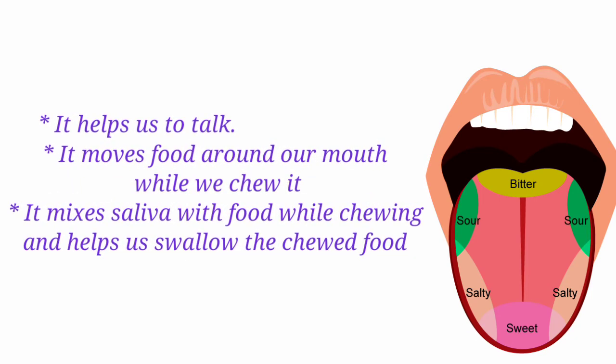In addition to identifying different tastes, the tongue also helps us in the following ways: it helps us to talk, it moves food around our mouth while we chew, it mixes saliva with food while chewing, and it helps us swallow the chewed food.